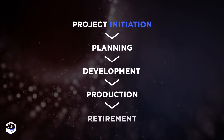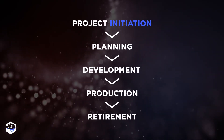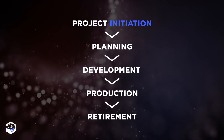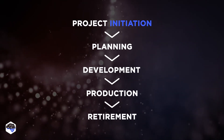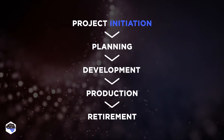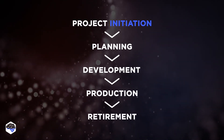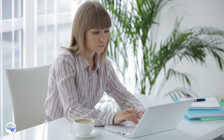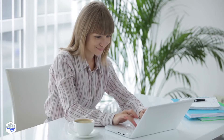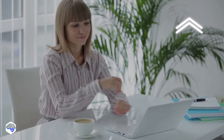Stage 5 — Retirement: at this stage, the product gets pulled from production so that our customers can migrate to a newer version. To monitor the team's efficiency, we recommend employing some of the Agile metrics. We have a great video on the topic, so make sure you watch it after this video.